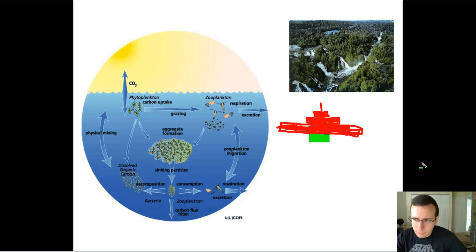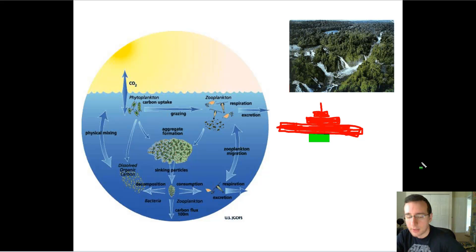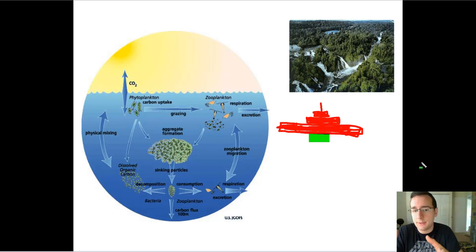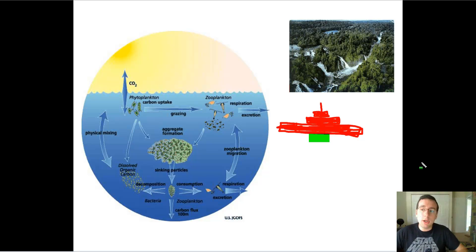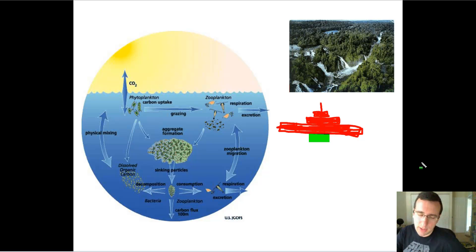Remember the concept of how you measure net primary productivity in the ecosystem — you can measure that by the increase in standing crop. That means the total amount of new biomass of producers that is produced all the time. So it's not so much about how many producers are available; it's more about how many new producers are available.